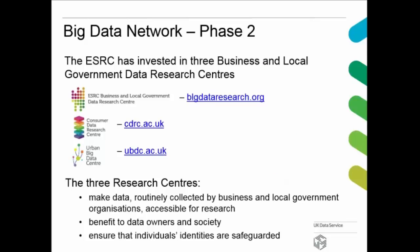ESRC has created a Big Data Network divided into three phases. As part of phase two, it supports the establishment of centres with a focus on business and local government data. These three centres are the SSC Business and Local Government Data Research Centre, the Consumer Data Research Centre, and the Urban Big Data Centre. They make data routinely collected by business and local government organisations accessible for research, safeguarding individuals' identities.